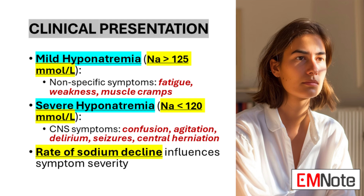As hyponatremia becomes more severe, with sodium levels dropping below 120 mMol per liter, the risk of central nervous system complications increases dramatically. This is due to the development of cerebral edema as water moves into brain cells in response to the hypoosmolar extracellular environment. Severe hyponatremia can manifest with pronounced CNS symptoms, including confusion, agitation, delirium, lethargy, somnolence, seizures, and in extreme cases, coma and central herniation.